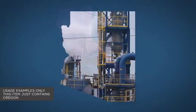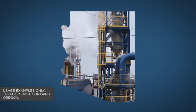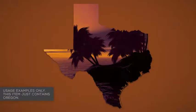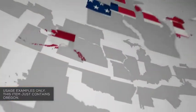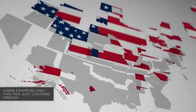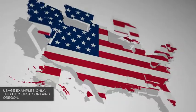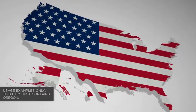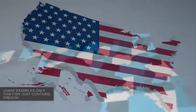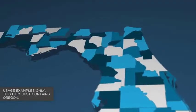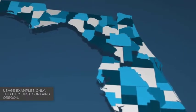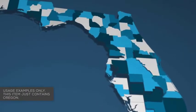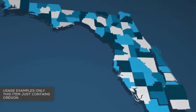Use your own content as a texture for the state — images, footage, whatever you need. Highlight counties with different colors to match your branding and to represent whatever you need the map to represent. Or get creative and add your own animations and images into the texture layers.